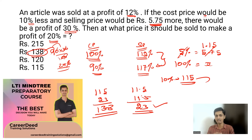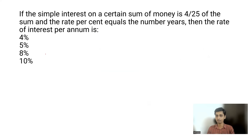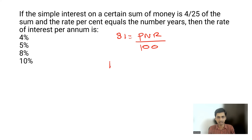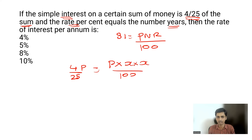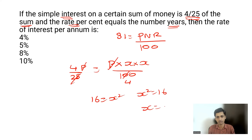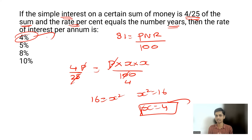Question five: The simple interest on a certain sum is 4/25 of the sum, and the rate percentage equals the number of years. Find the rate of interest per annum. Using SI = PNR/100: set SI = 4P/25, and since rate R = years N = x, we get 4/25 = x²/100. Solving: x² = 16, so x = 4. The rate of interest is 4% per annum.